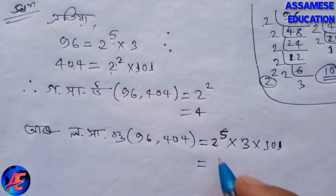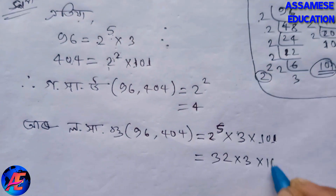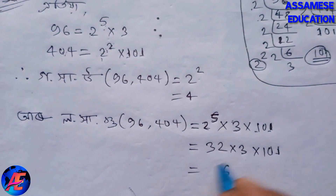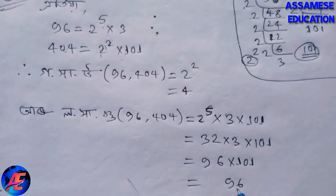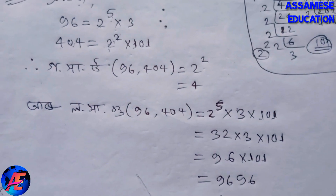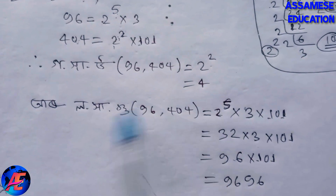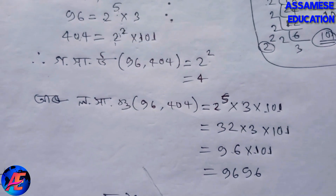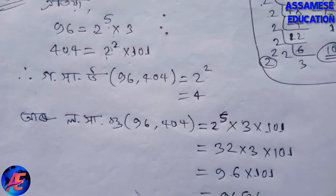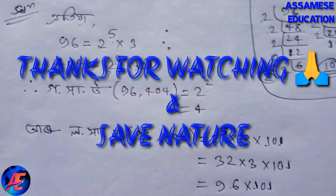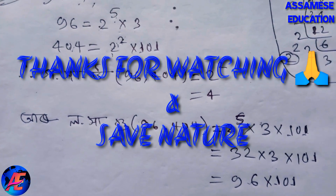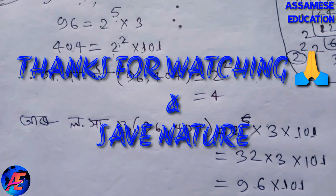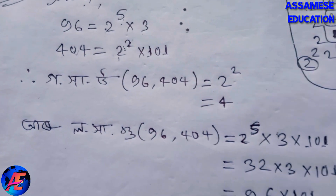So 2 to the power 5 means 32, into 3 into 101. That gives us 96 into 101, which equals 9696. So the LCM of 96 and 404 is 9696.